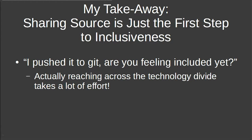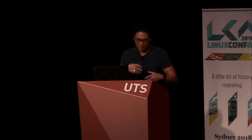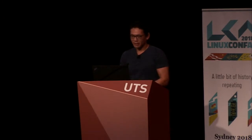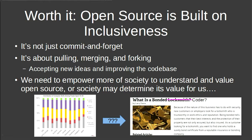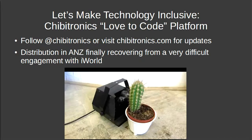To wrap up: sharing source is just the first step to inclusiveness — pushing to GitHub does not make a lot of people feel really included. Actually reaching across the technology divide takes a lot of effort. When people ask why I haven't moved to my next big project, it's because turning a product into something with the necessary ecosystem for beginners to pick up is really hard. But open source is built on inclusiveness — it's not about committing and forgetting, it's about pulling, merging, and forking. Without users, you can't improve your codebase, and we need more of society to understand the value of open source, otherwise society may determine its value for us — in a vote.